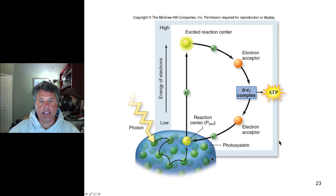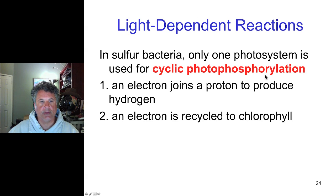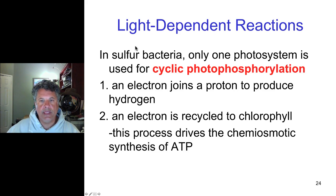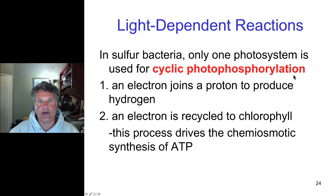There is also cyclic photophosphorylation in the green sulfur bacteria, in which electrons are cycled back to the photosystem. Here hydrogen is produced when electrons join a proton, and these sulfur bacteria use hydrogen sulfide as an electron donor. Neither these bacteria nor the purple non-sulfur bacteria have photosystems with enough oxidative power to accept electrons from water, so there is no oxygenic photosynthesis — both cases involve cyclic photophosphorylation.